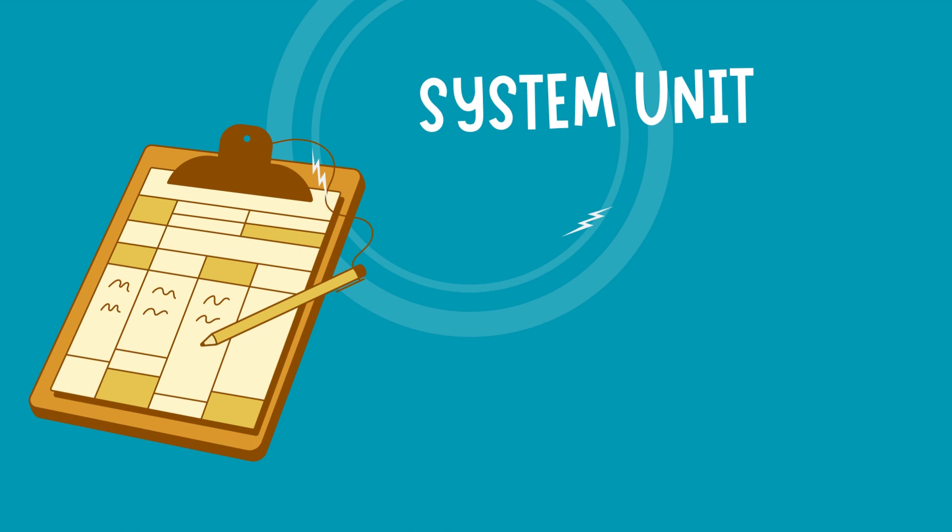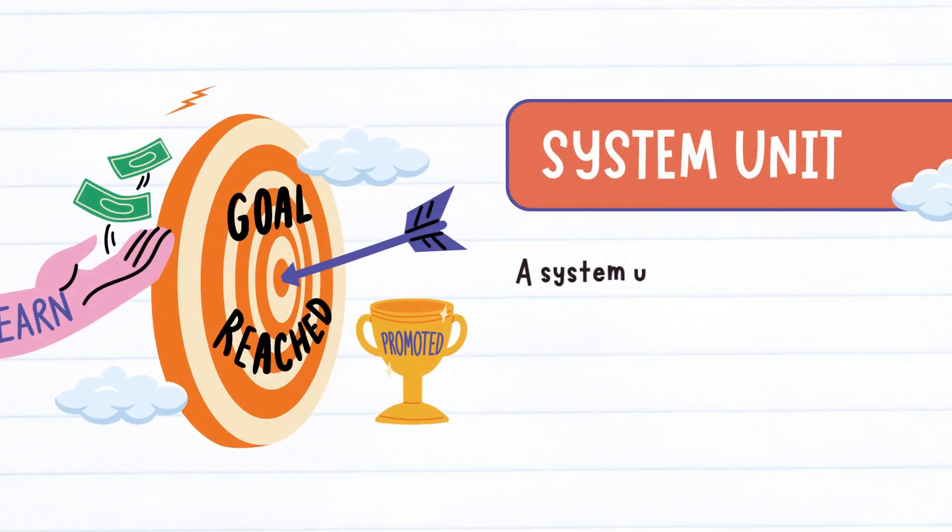But a system unit is actually not that part. It actually consists of so many little components that we are going to discuss in today's lesson. A system unit is actually the part of a computer that houses the primary devices that perform the most operations and produce results for all the complex calculations.